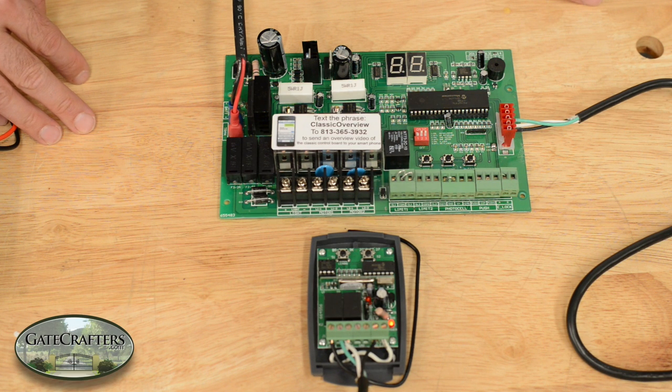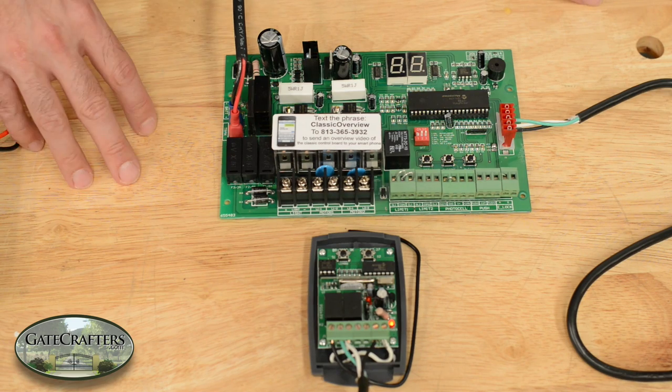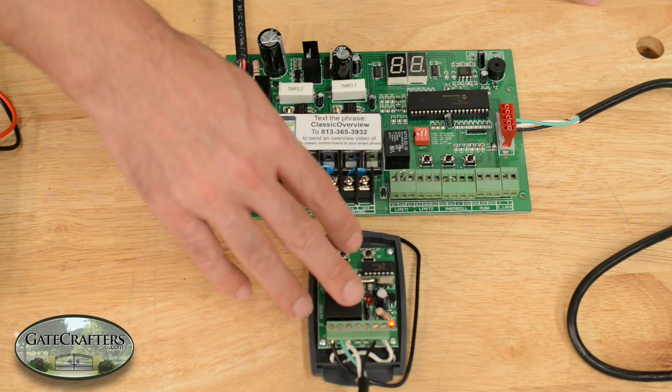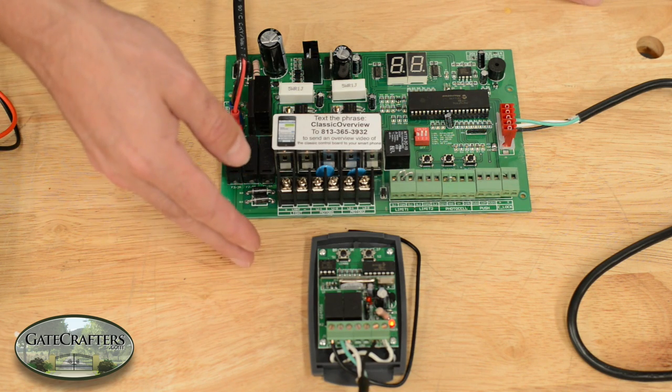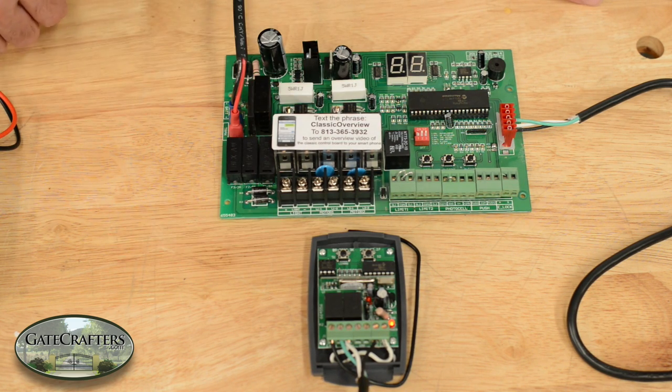For customers with an ES3050 PCB or an ES1000 PCB, there may come a time when your receiver, though the power light is on and you hear it click when you press your remote, does not activate the gate opener.